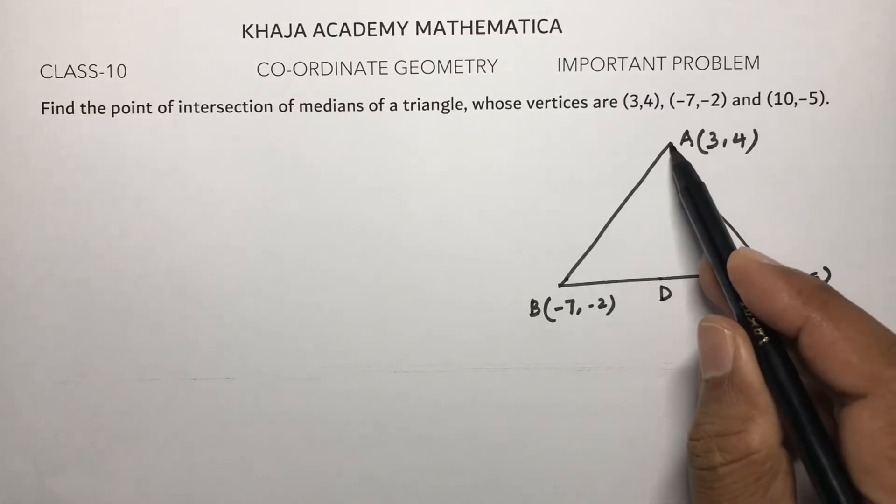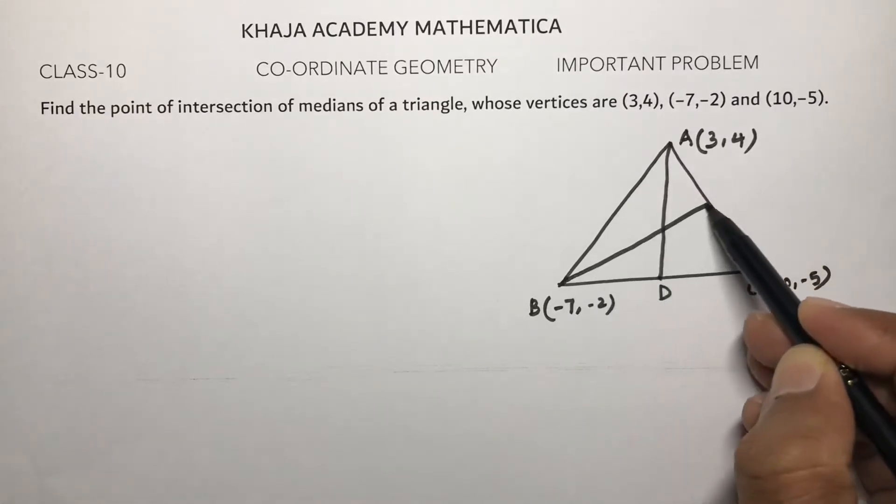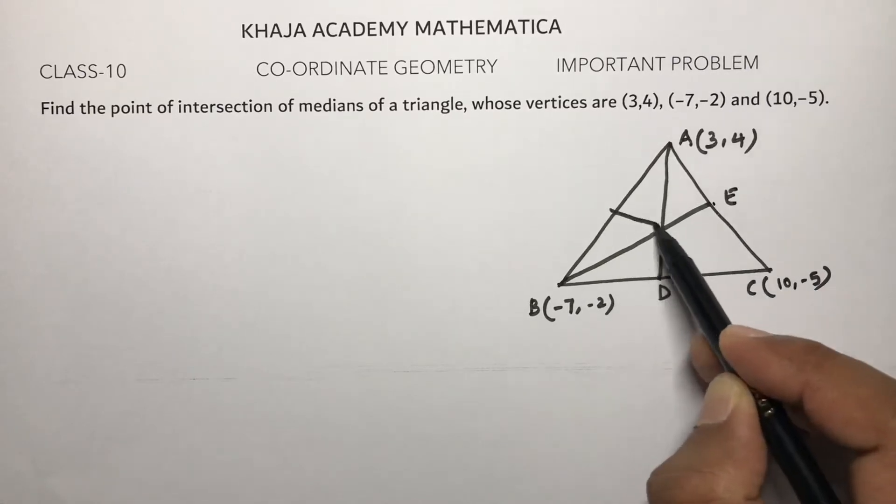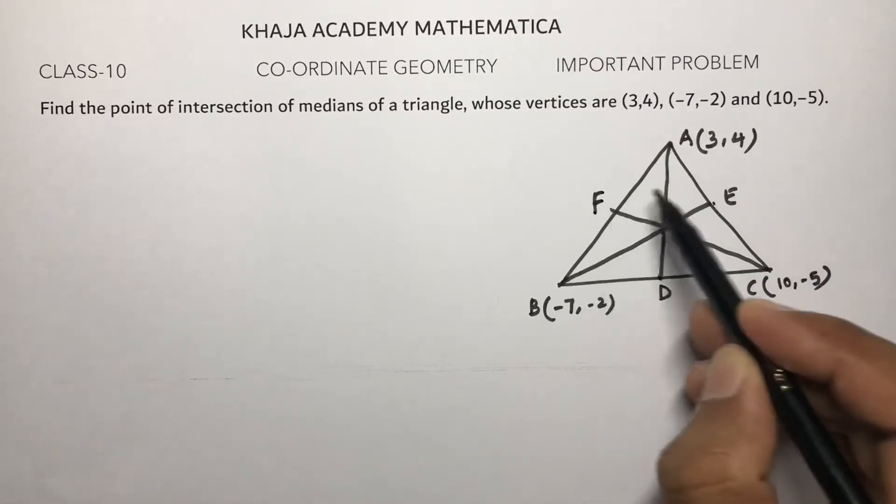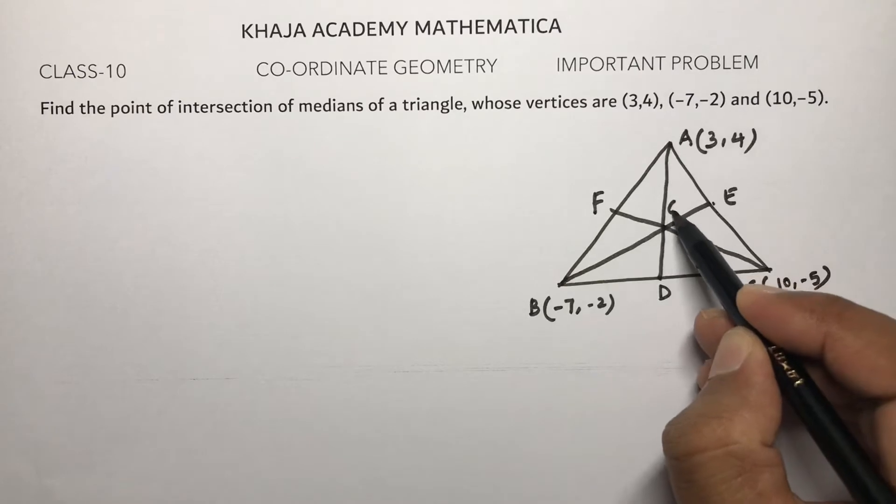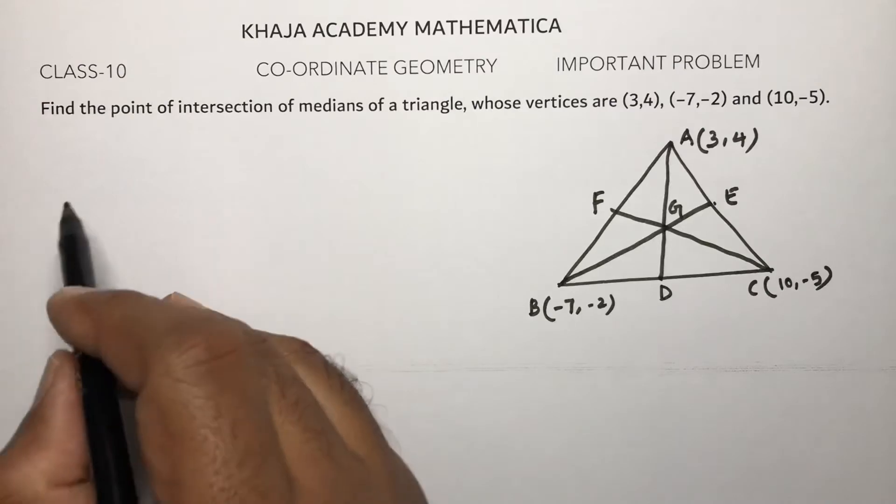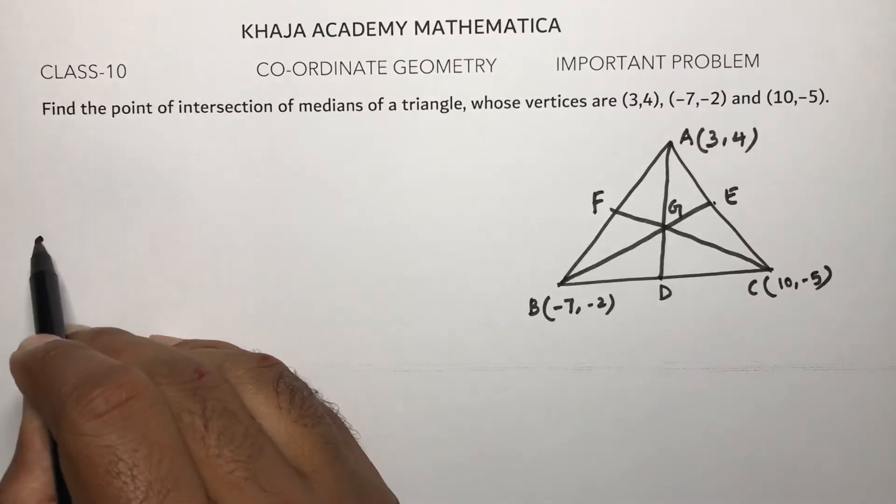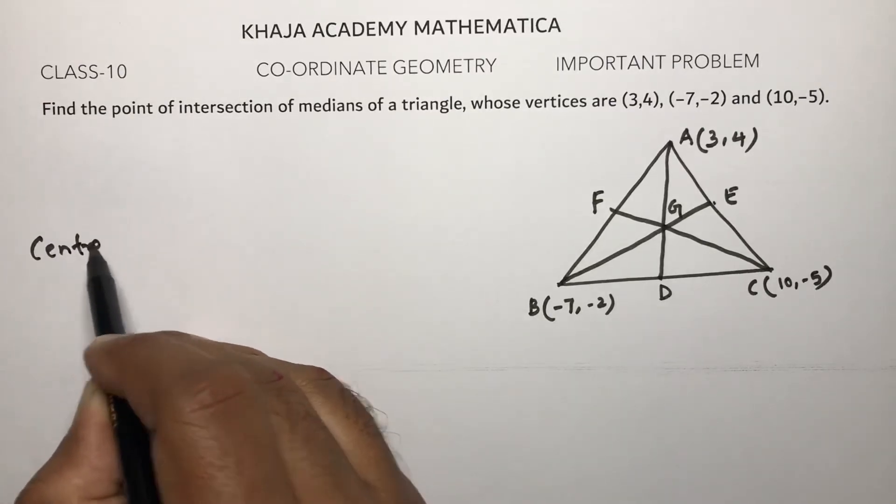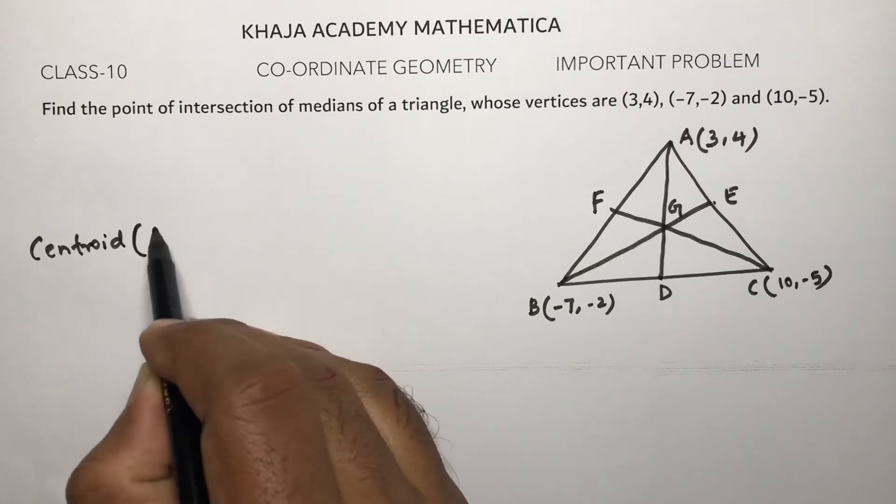Three medians will all meet at one point, and that point is called the centroid. The point of intersection of medians is nothing but the centroid, denoted by letter G.